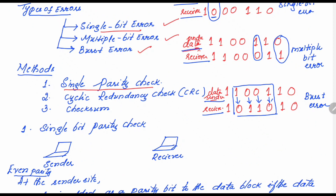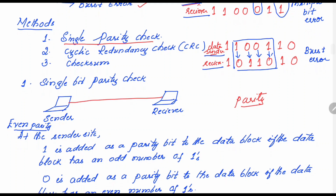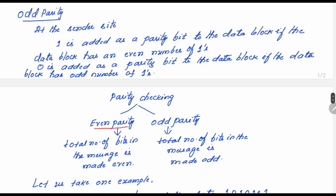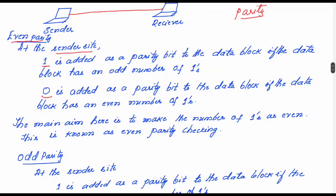What is single parity check? Parity is a special bit that is appended to the data. The sender sends data to the receiver, and parity checks are of two types: even parity and odd parity. In even parity, a 1 is added as a parity bit if the data block has an odd number of ones, and a 0 is added if the data block already has an even number of ones. These steps happen at the sender side.